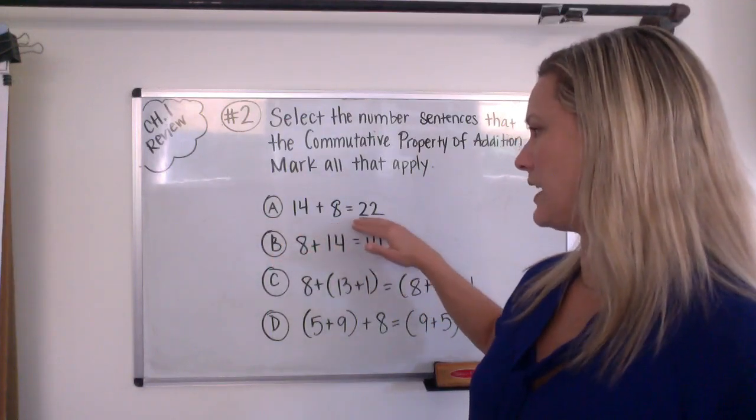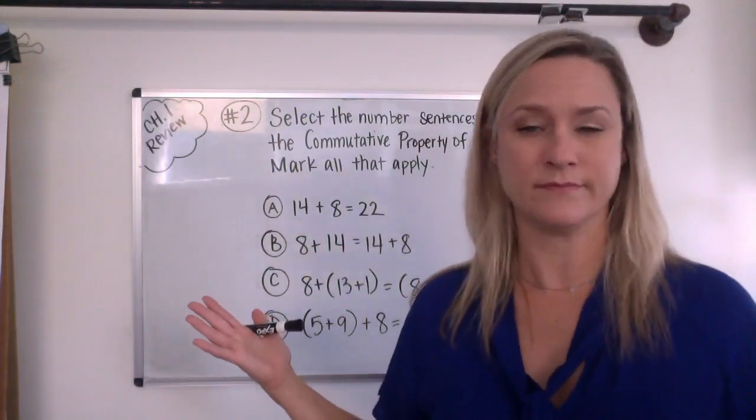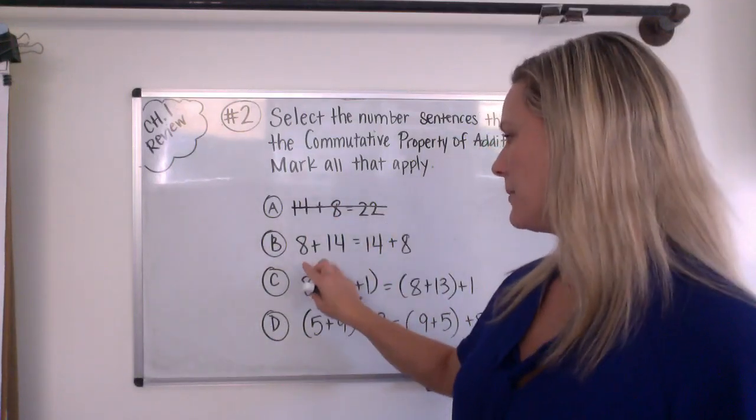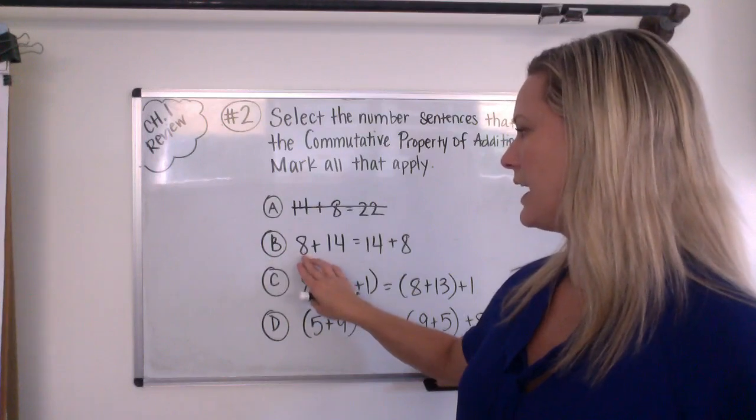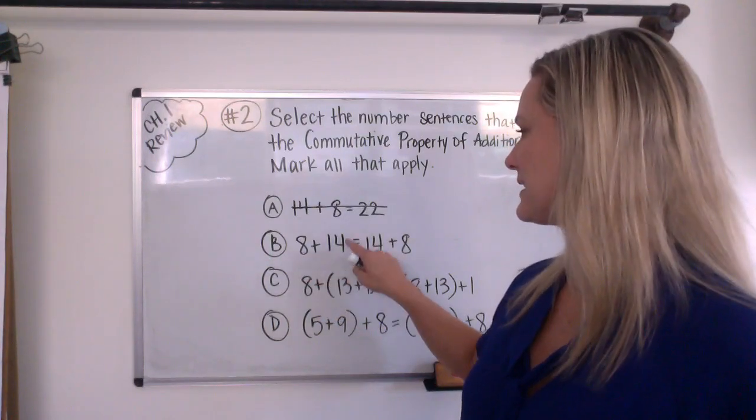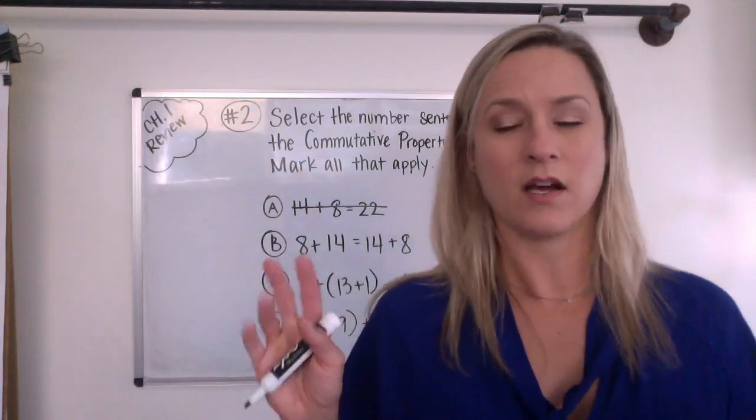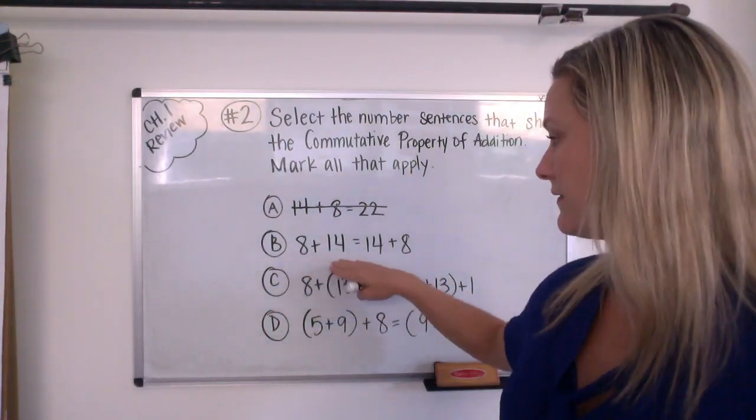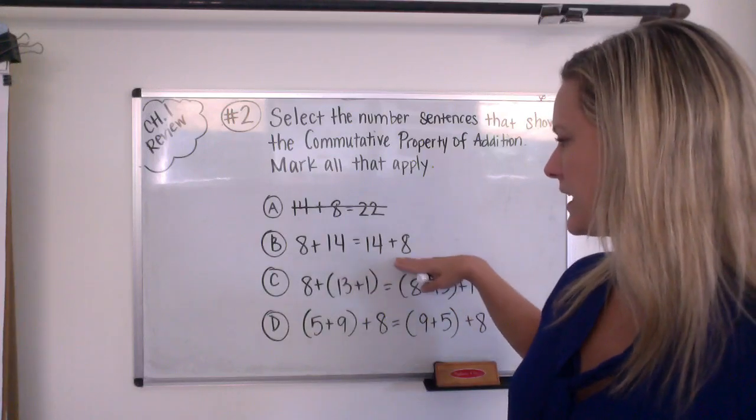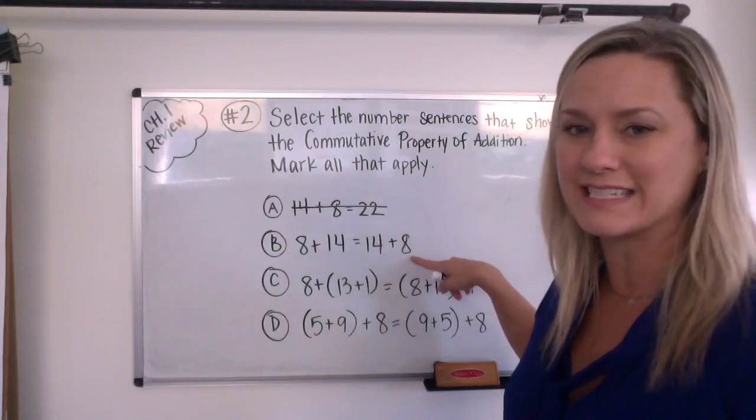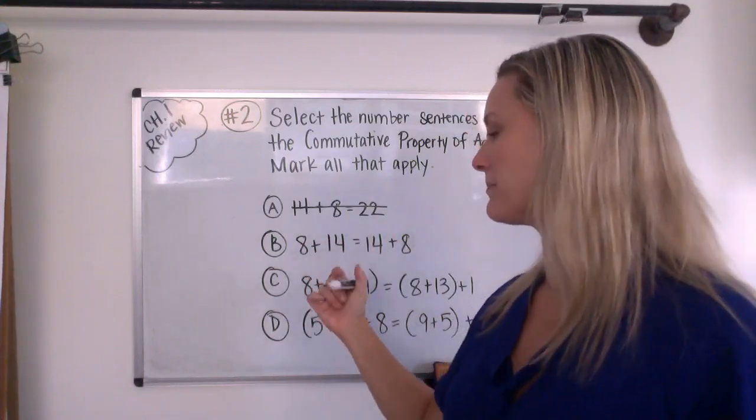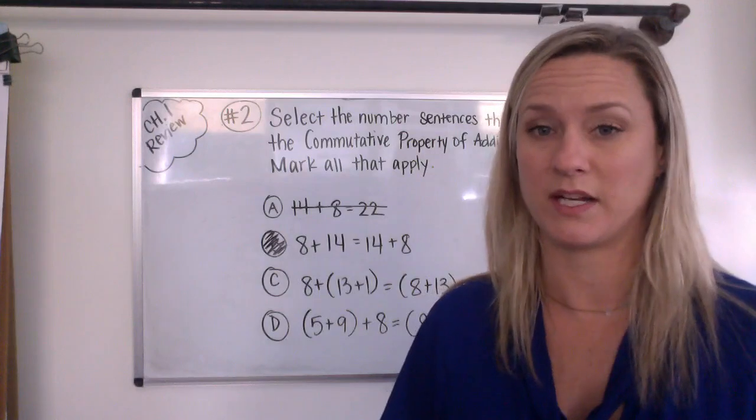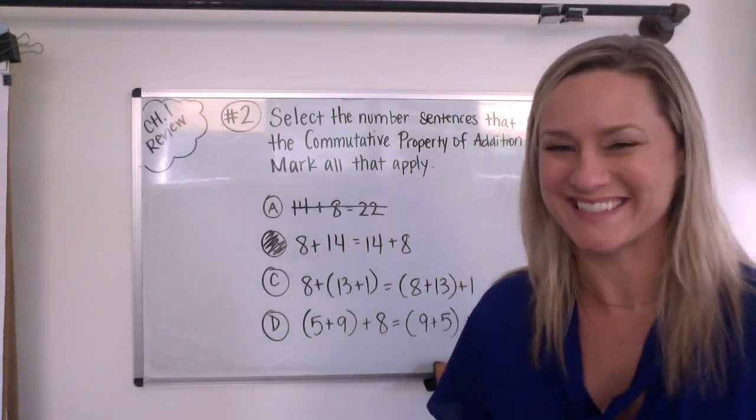All right, so in the commutative property, something is moving. So let's check this out. Here's A, 14 plus 8 is 22. Well, nothing moved there, so that one's out. All right, how about this one? B says 8 plus 14 is the same as 14 plus 8. All right, so things moved. 8 was in the beginning of the equation, on this side of the equation, and then on this side of the equation, it's at the end.